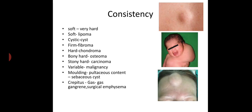Next, consistency — can vary from soft to very hard. Soft as in lipoma, cystic as in cysts, firm as in fibroma, hard as in chondroma, bony hard as in osteoma, stony hard as in carcinoma. Variable consistency can occur in malignancy. In sebaceous cyst, the content is pultaceous and mouthing occurs. In case of gaseous content, crepitus is felt as in gas gangrene or surgical emphysema.